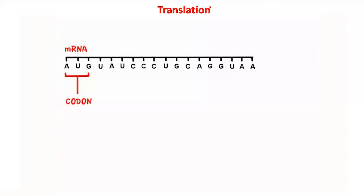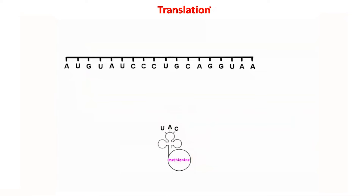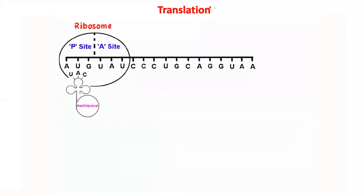Key terms: mRNA or messenger RNA is made up of codons. tRNA or transfer RNA has an anticodon, which defines the amino acid it carries. Translation takes place in the cytoplasm. The ribosome attaches to the mRNA at the start codon, AUG. The ribosome is made up of ribosomal RNA and ribosomal protein, and has two sites: the P site and the A site. A tRNA carrying the complementary anticodon to AUG attaches in the P site.